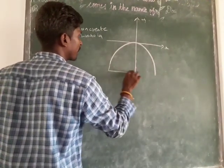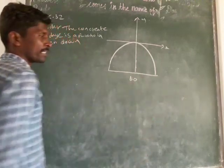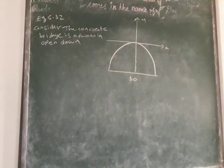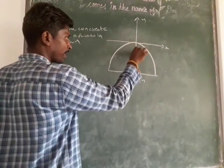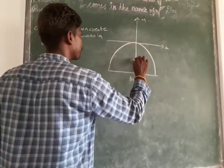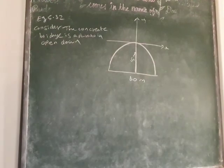They given the width of the bridge is 40 meters. And the maximum height, that means we get maximum height is 15 meters. Then what is the equation of the bridge, they ask you.